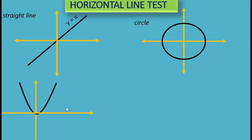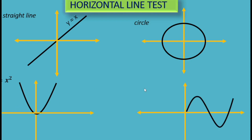The third problem is a quadratic function. Applying the horizontal line test, the horizontal line intersects the curve at more than once, so it is not one-to-one. The next problem is the sine function — applying the horizontal line test, the horizontal line intersects the curve at more than once, so the sine function is not one-to-one.